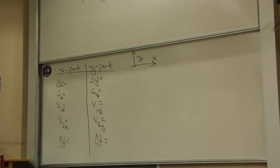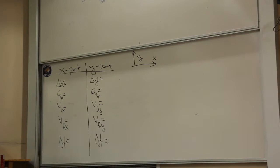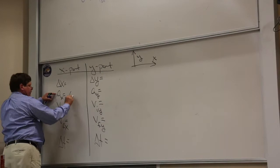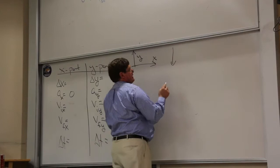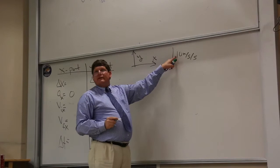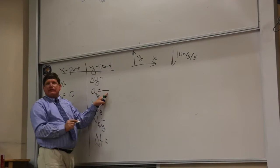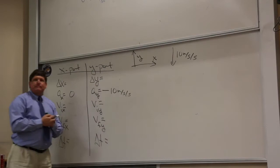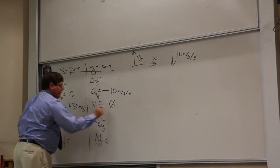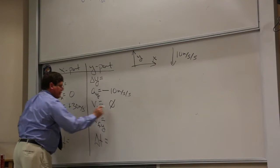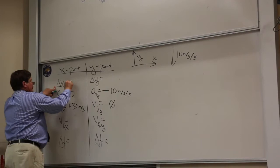Let's look at our problem. As soon as that ball leaves the desk, it's in free fall. In this coordinate system, the acceleration is negative 10 meters per second per second in y. The ball starts with an initial horizontal velocity of 30 meters per second and no vertical velocity, so that's zero. It lands 120 meters to the right of where it started, so delta x is 120 meters.